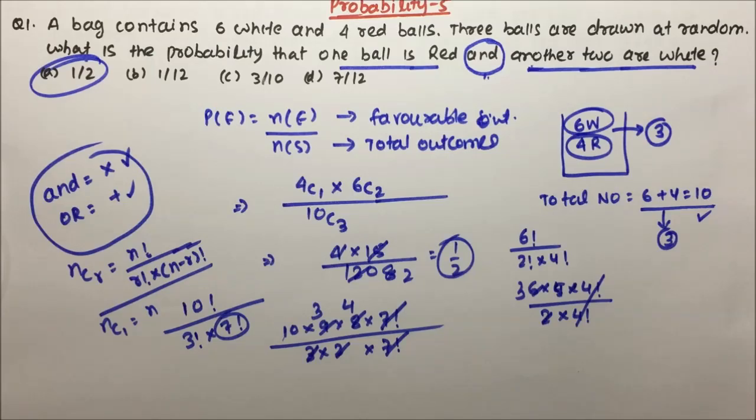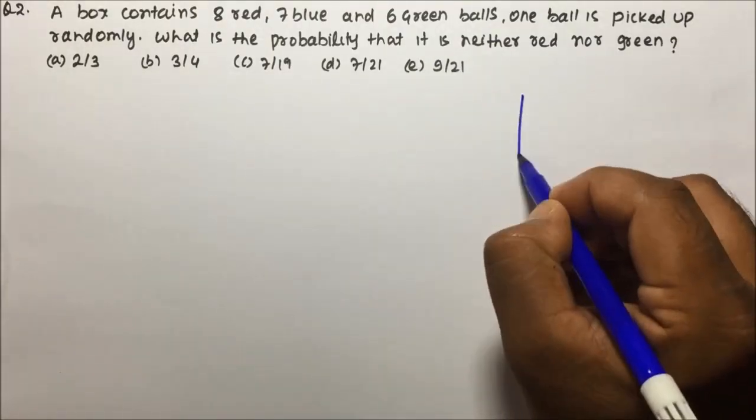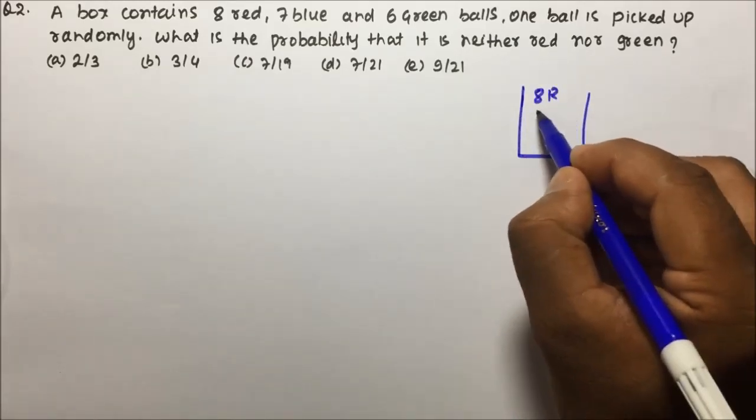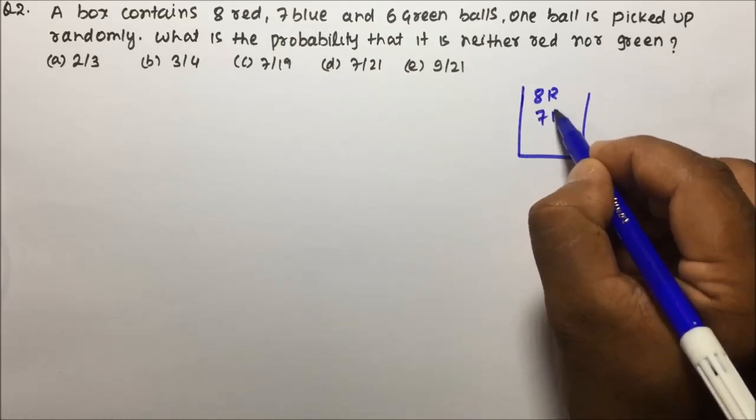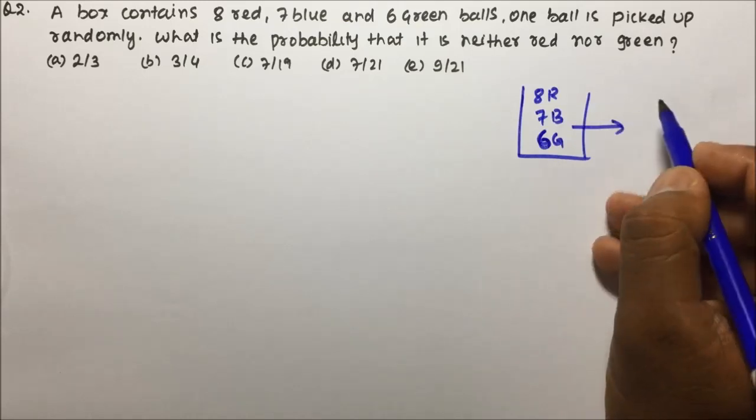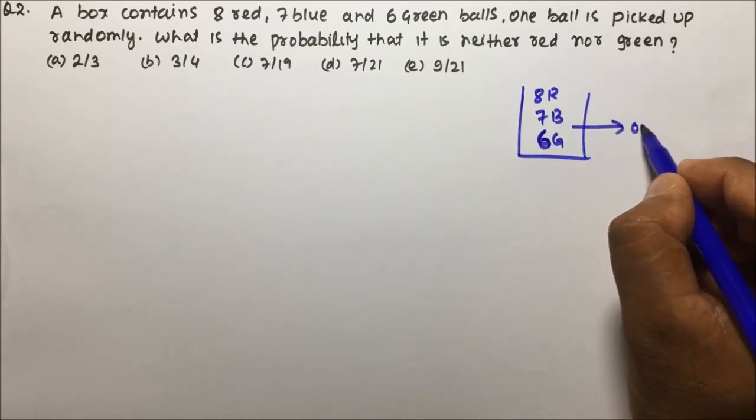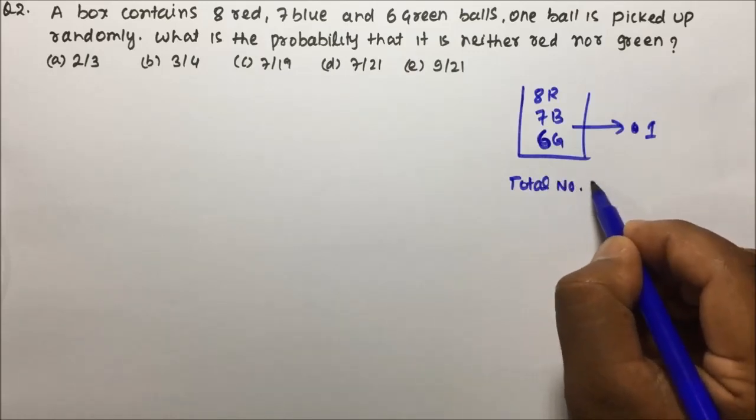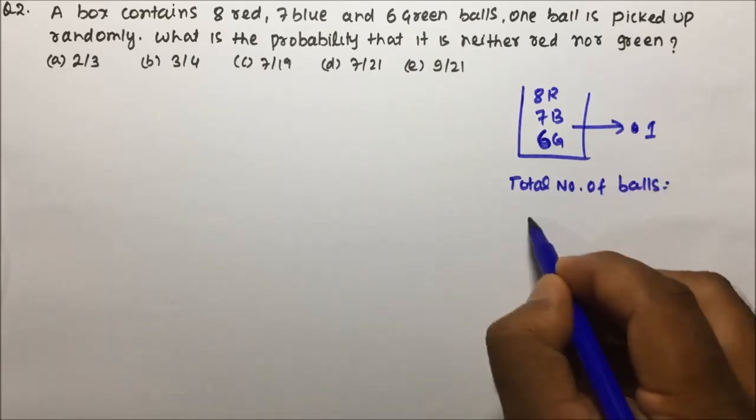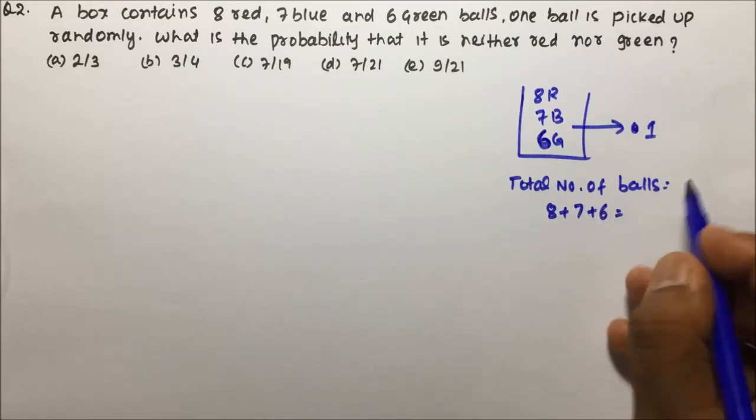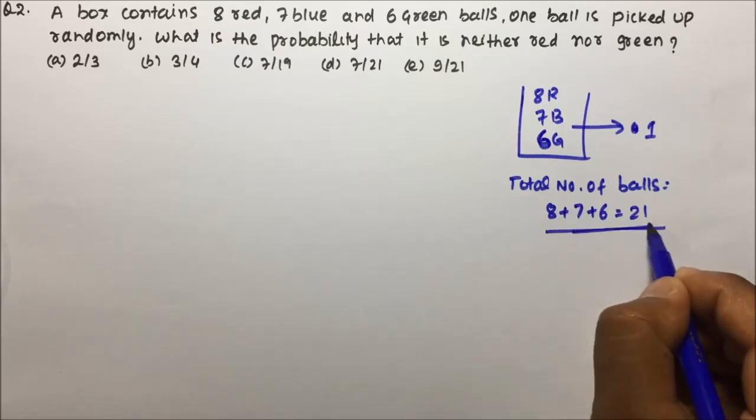Now moving towards question number 2. All these questions are based on balls. A box contains 8 red, 7 blue, and 6 green balls. 1 ball is picked up randomly. So here we are going to pick only 1 ball. If you calculate the total number of balls, friends, it will be 8 plus 7 plus 6. So 8 plus 7 is 15, plus 6 is 21. So out of 21 balls you are going to draw 1 ball.